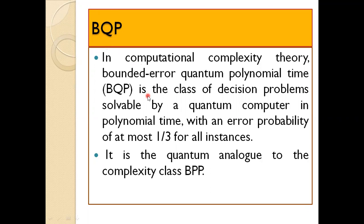Bounded Error Quantum Polynomial Time is the class of decision problems that can be solved by a quantum computer in polynomial time. If you are already familiar with polynomial versus non-polynomial, P and NP, you already understand what polynomial-time solvable means. There is a minimum error probability, and that is at most one-third for every instance. That is BQP — the complexity class related to quantum computation.